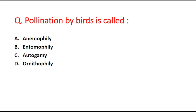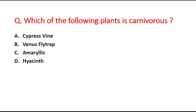Next question: pollination by birds is called blank. Option A is anemophily, option B is entomophily, option C is autogamy, and option D is ornithophily. The right answer is option D, ornithophily. The study of bird species is known as ornithology.